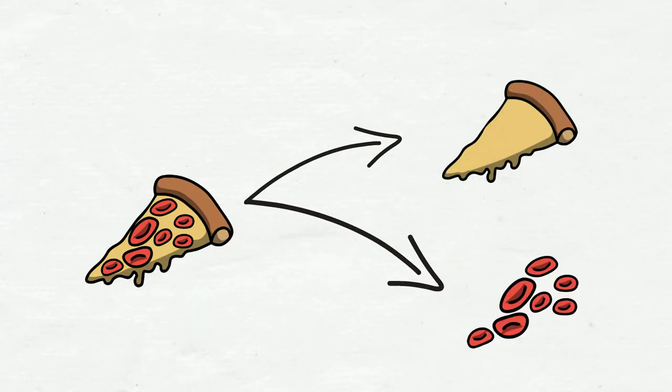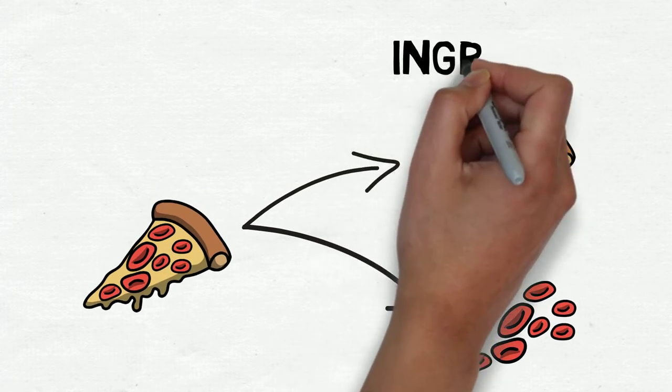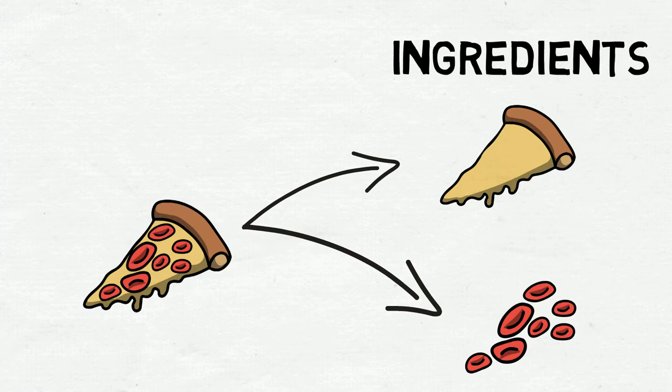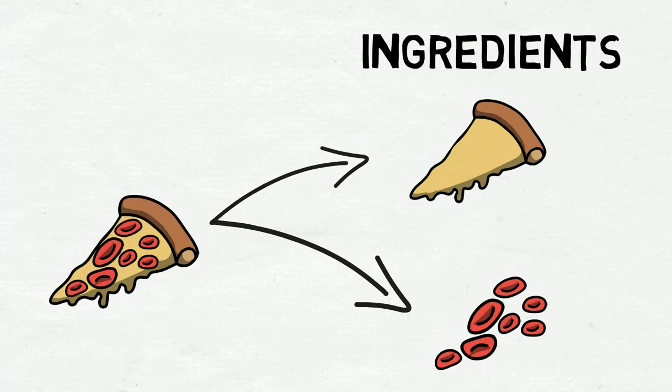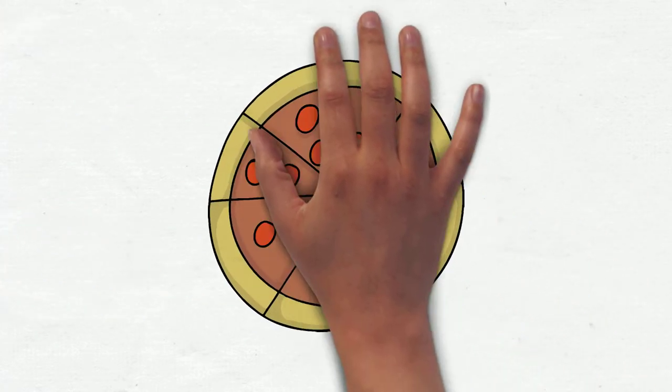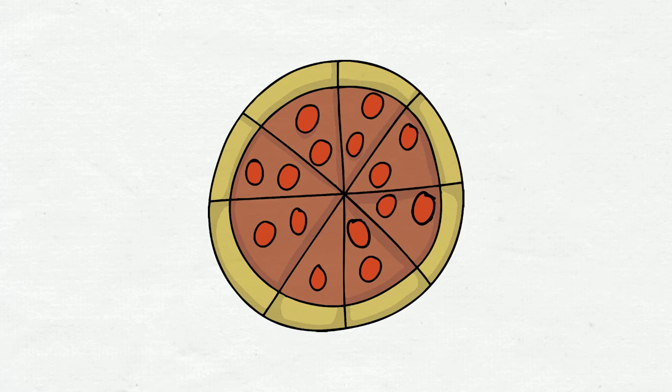So, if I want to make a pepperoni pizza, I know which ingredients to use. I should use pizza dough and cheese, and also the pepperoni. If we know how to make a pizza, we know the ingredients.